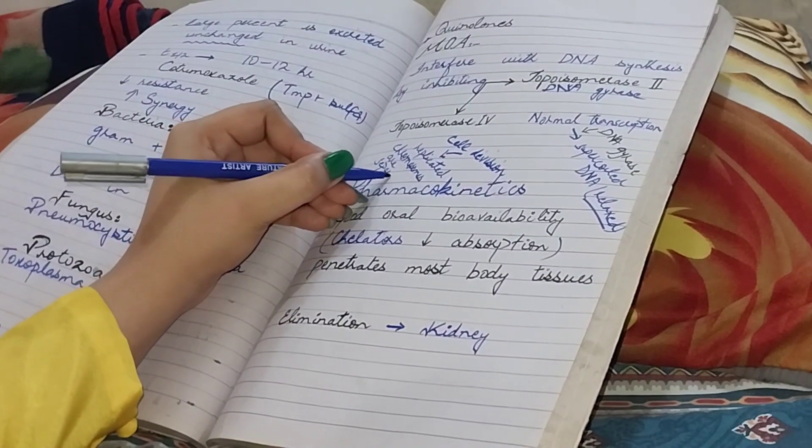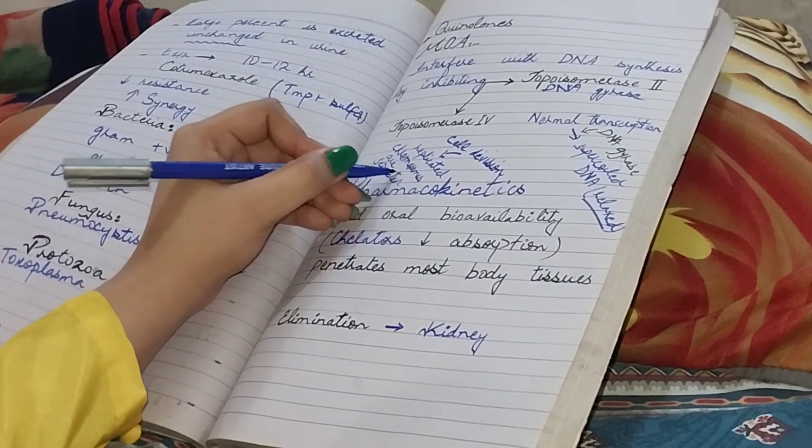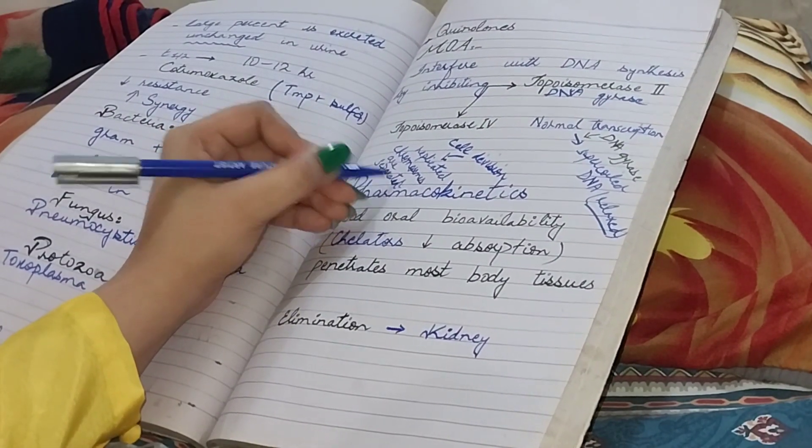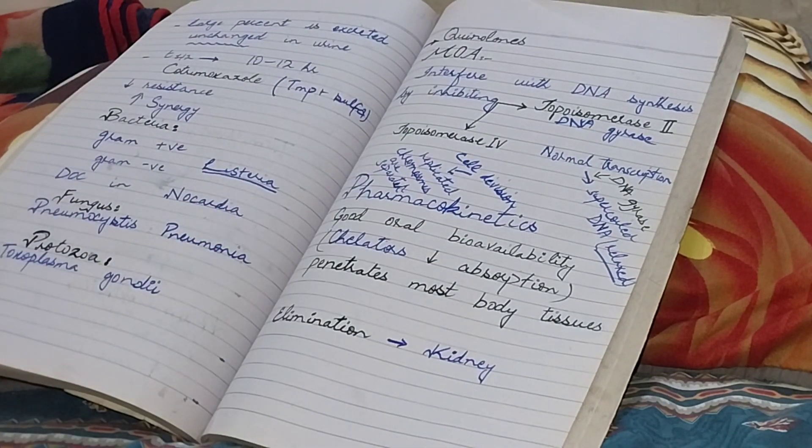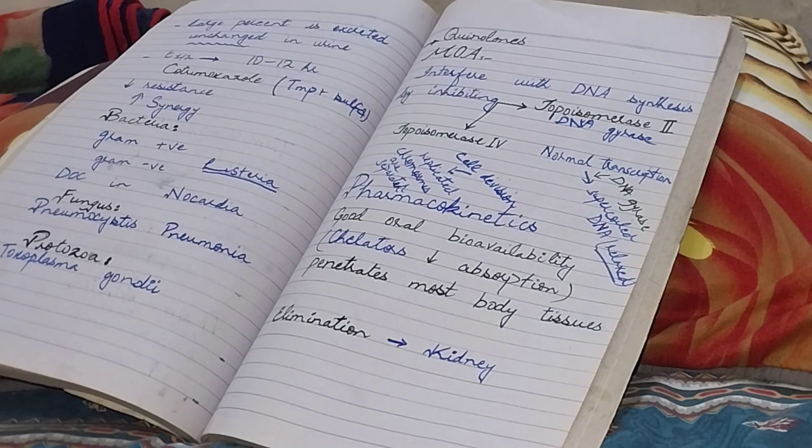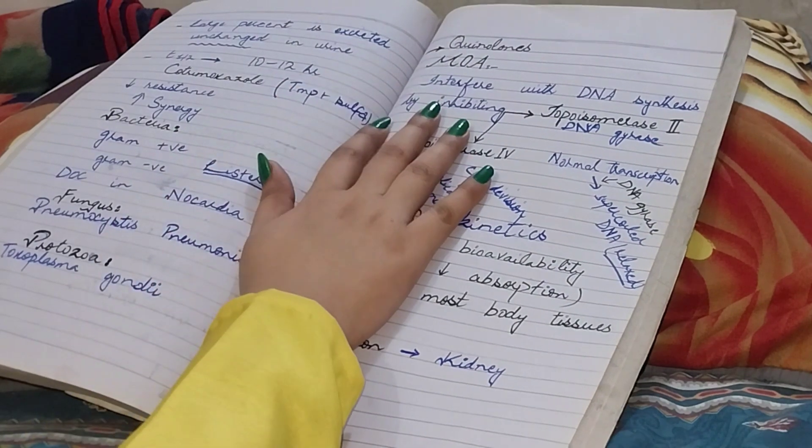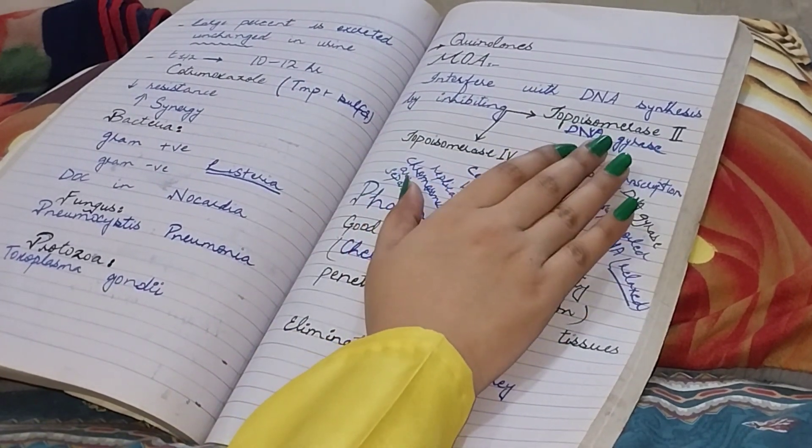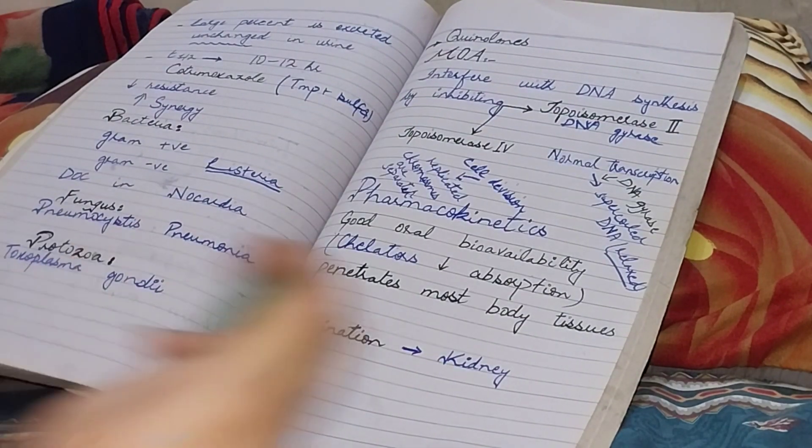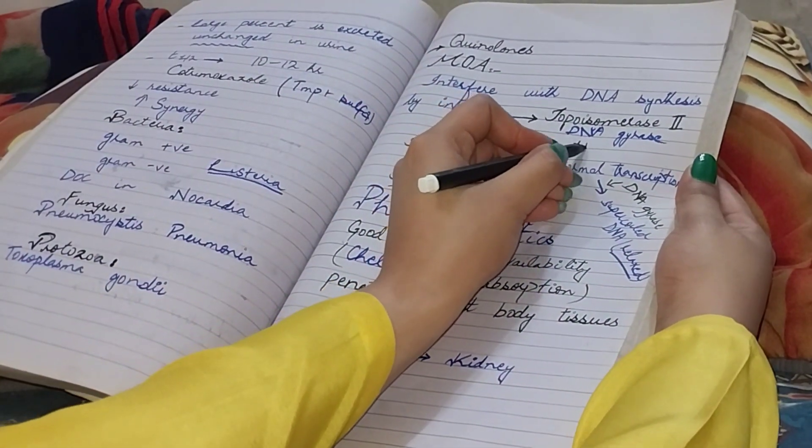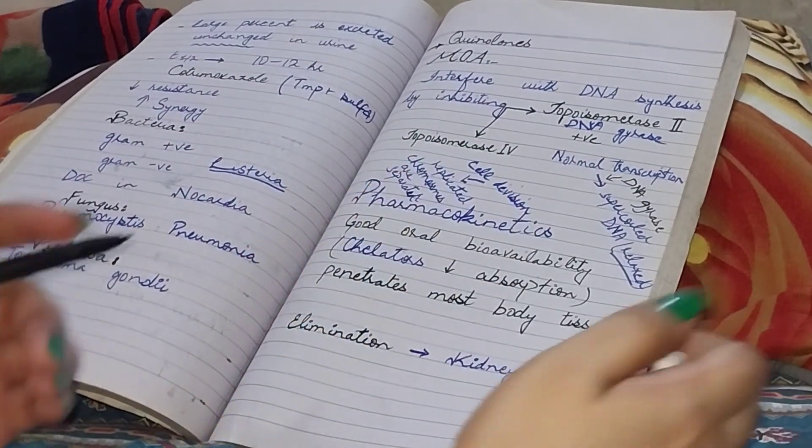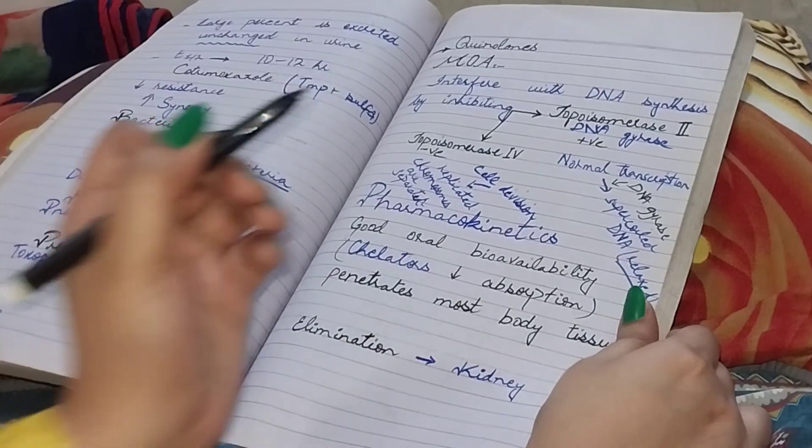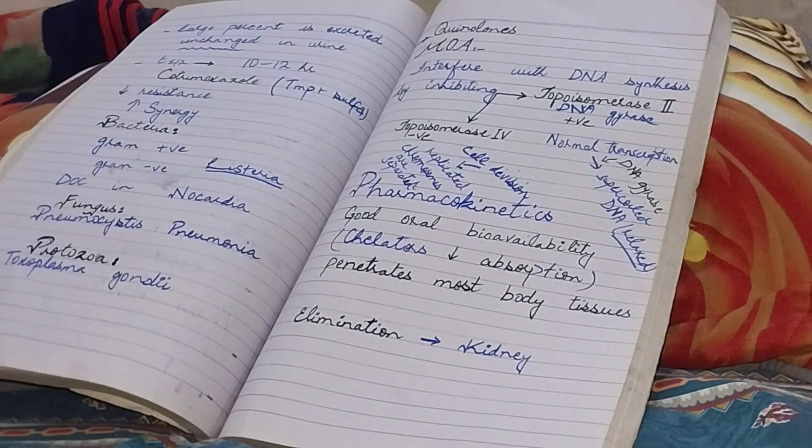And during cell division, replicated chromosomes are separated, and this separation takes place with the help of topoisomerase 4. So quinolones are interfering with DNA synthesis by inhibiting topoisomerase 2, DNA gyrase specifically in gram positive, and topoisomerase 4 specifically in gram negative organisms.